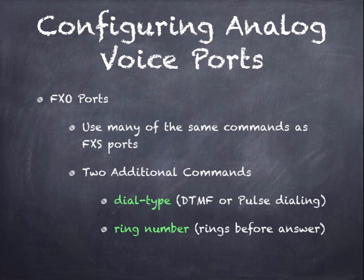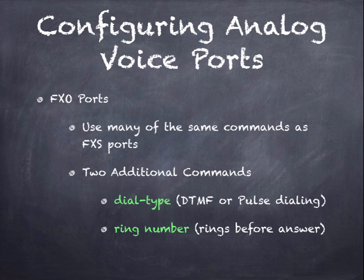FXO ports use many of the same commands as FXS ports — they're almost identical. There are two additional commands unique to FXO ports. First, dial type, which lets you choose dual-tone multi-frequency (DTMF), typical of a modern number pad, or pulse dialing, which is the older rotary dial. Second, ring number — this is how many rings before it auto-answers. Typically a value like 3 is used, meaning it would hear 3 rings before picking up the line.